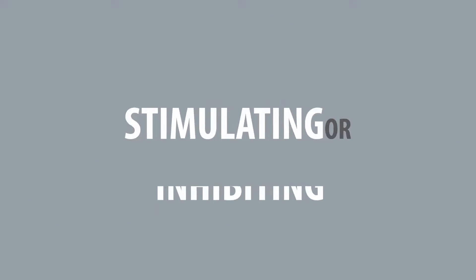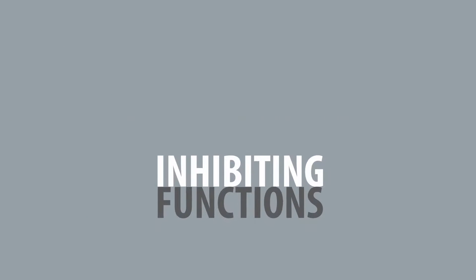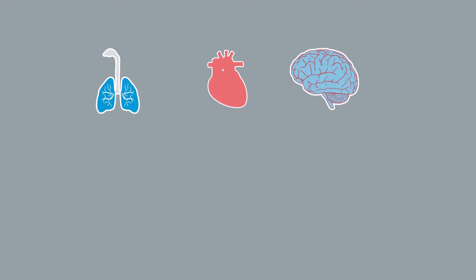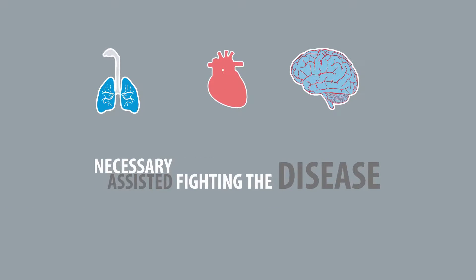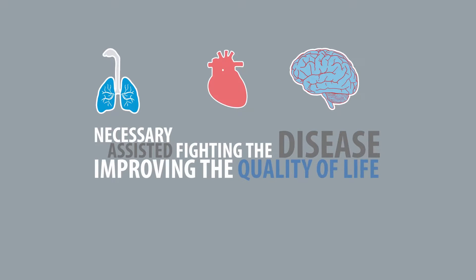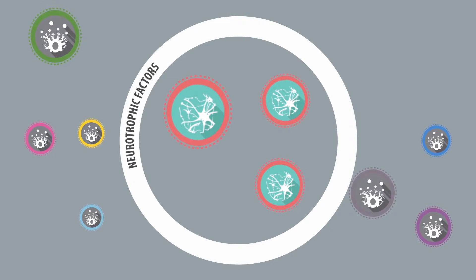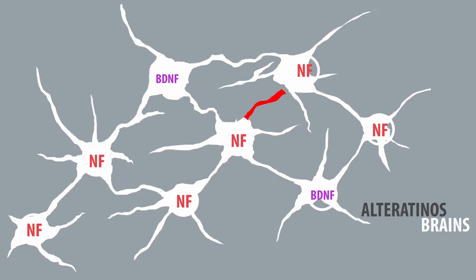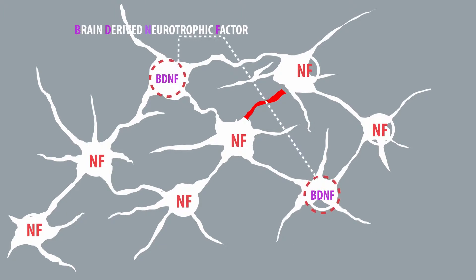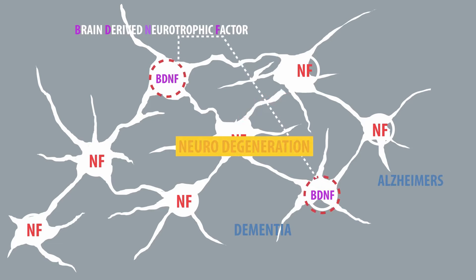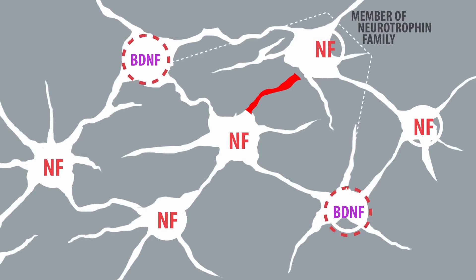It is evident that stimulating or inhibiting some functions in the affected tissue or the related organ is necessary to assist it in fighting the disease and improving the patient's quality of life. For example, neurotrophic factors, a family of growth factors, have revealed that alterations in the brain's neurotrophic support, specifically the brain-derived neurotrophic factor (BDNF) expression and signaling, might contribute to neurodegeneration and lead to diseases such as Alzheimer's and dementia.